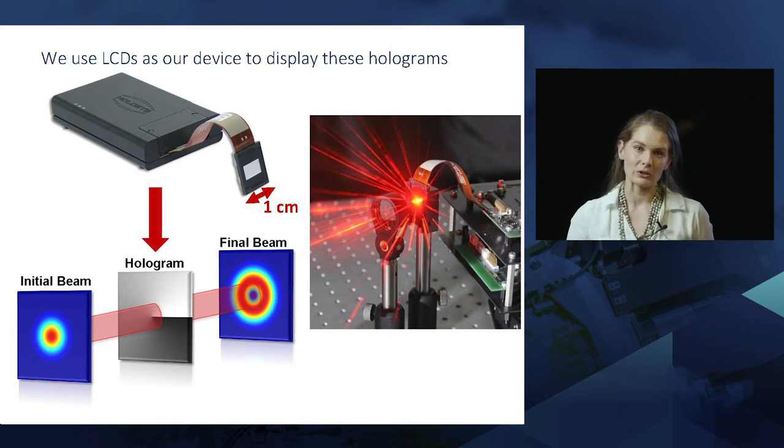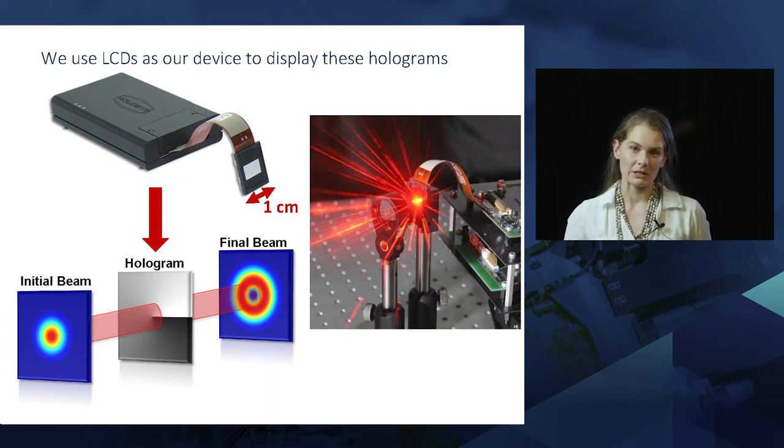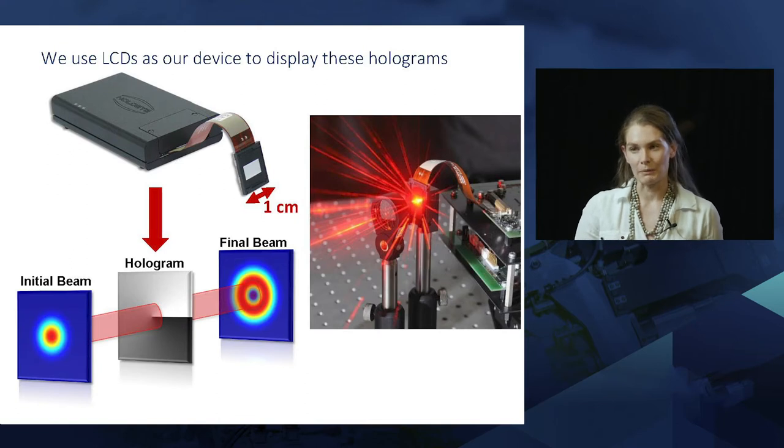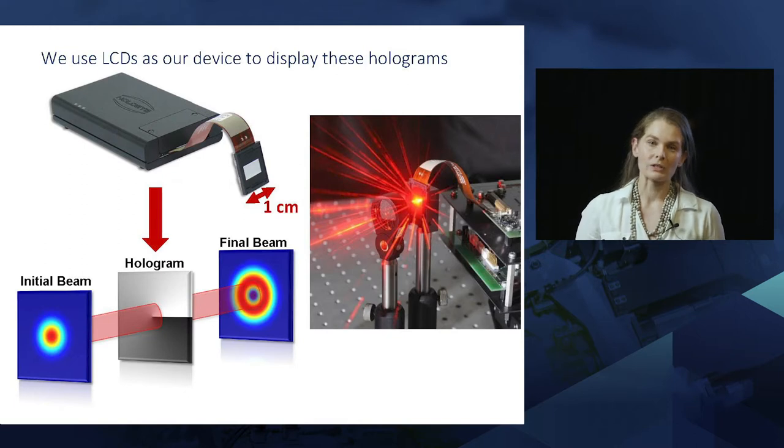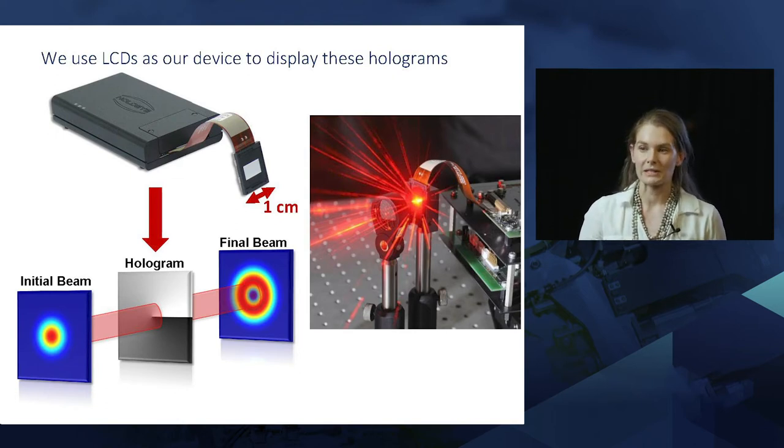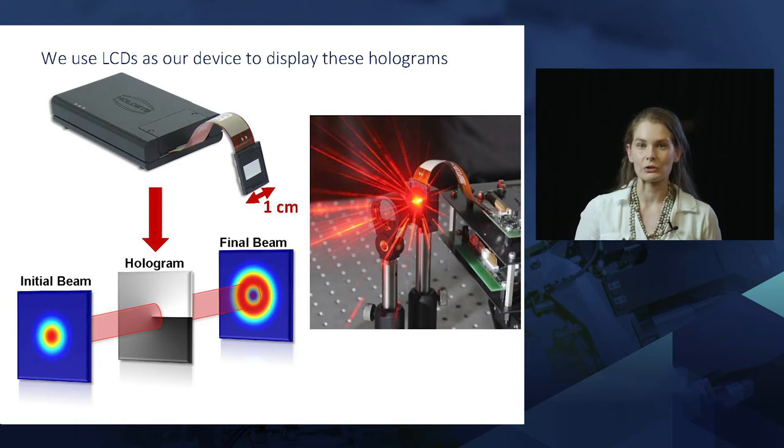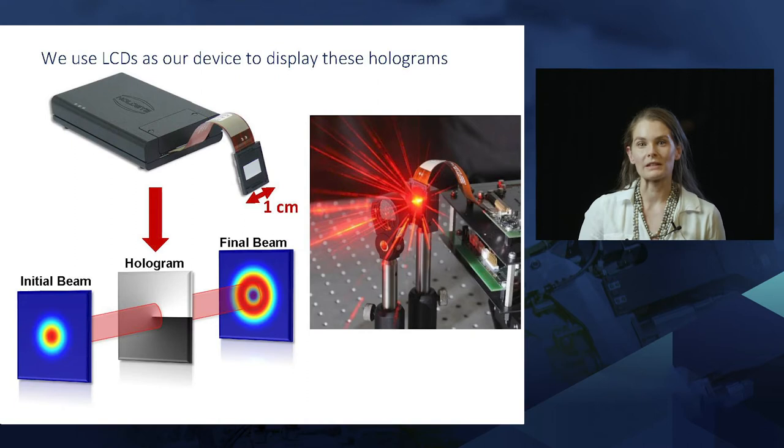So the know-how on how to do this has been around for a very long time, but it's only recently been possible to implement this digitally. And this has been due to the advancement of liquid crystal technology. So the device that we make use of a lot in our lab is termed a spatial light modulator. It consists of a tiny liquid crystal display where we program and address our digital hologram. And then depending on the shade of gray that's present in that hologram, we can alter the phase of our incident light, which consequently alters the amplitude or intensity profile of our light. Even though these devices are extremely small, they offer very high resolution and very fast refresh rates.